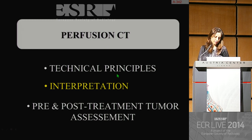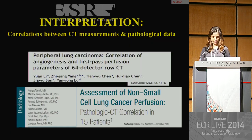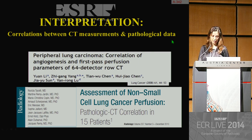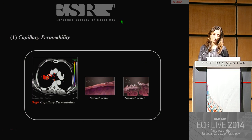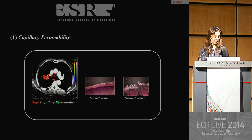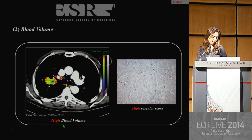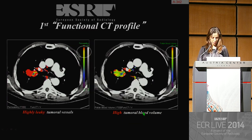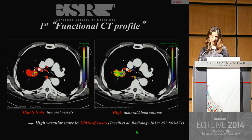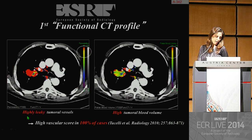Now that we are familiar with technical principles of perfusion CT, how can we interpret this new imaging? The correlations between CT measurements and pathological data have allowed us to establish CT functional profiles. The first functional profile: the vast majority of tumors has high capillary permeability associated with high blood volume, corresponding to high vascular score on pathological slides, observed in 100% of cases in our experience. The key elements are high leaky tumoral vessels associated with high tumoral blood volume.